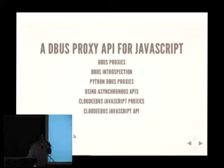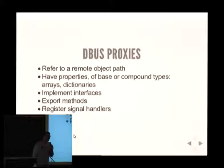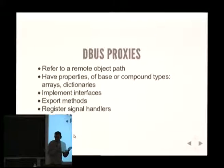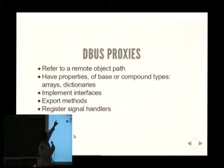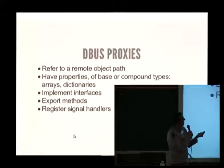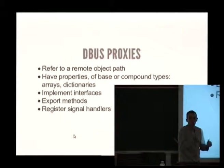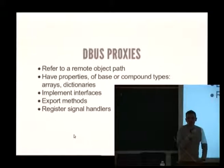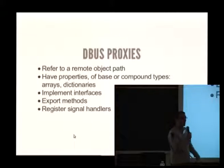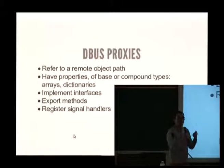Now let's go through the DBus proxy API. What is a DBus proxy? A proxy is a reference to an object on the server. It has properties that can be of simple types or complex types like dictionaries and arrays. It implements interfaces with methods, and you can register a callback on the proxy to respond to a DBus signal.